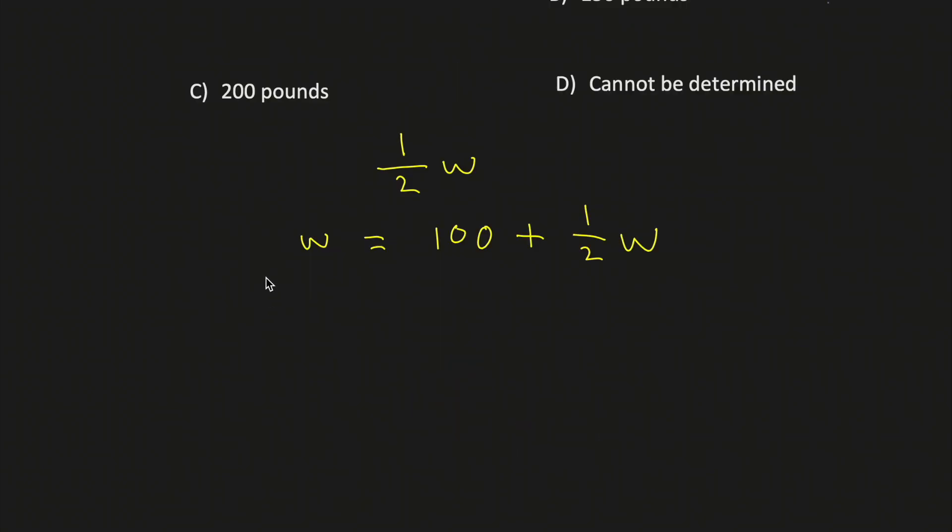We'll subtract 1 half W from both sides of the equation. On the left, we'll get 1 half W. And on the right, we'll get 100.